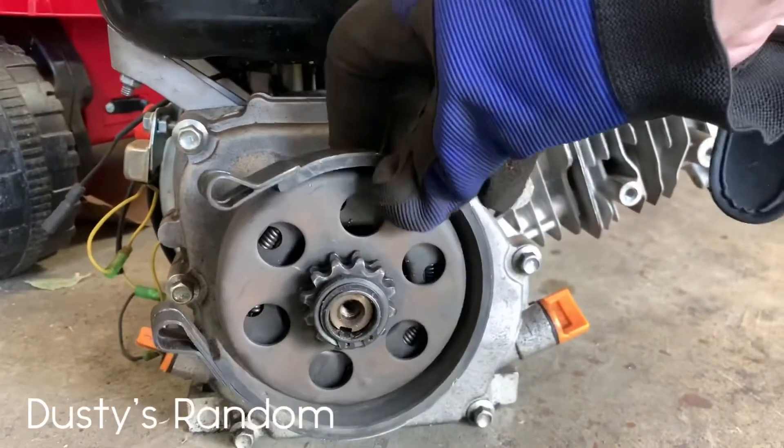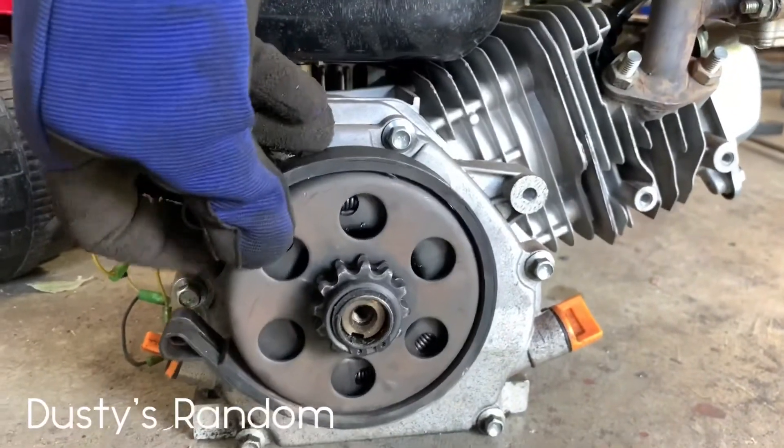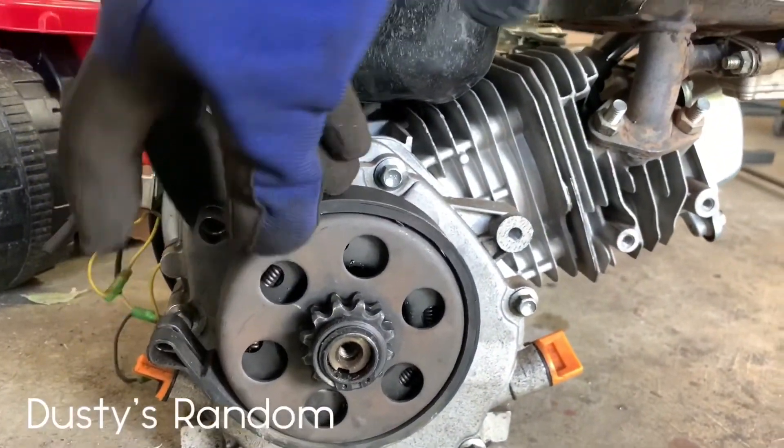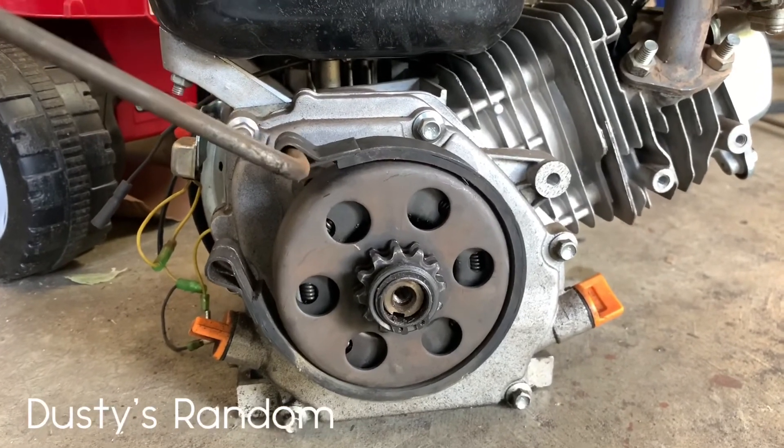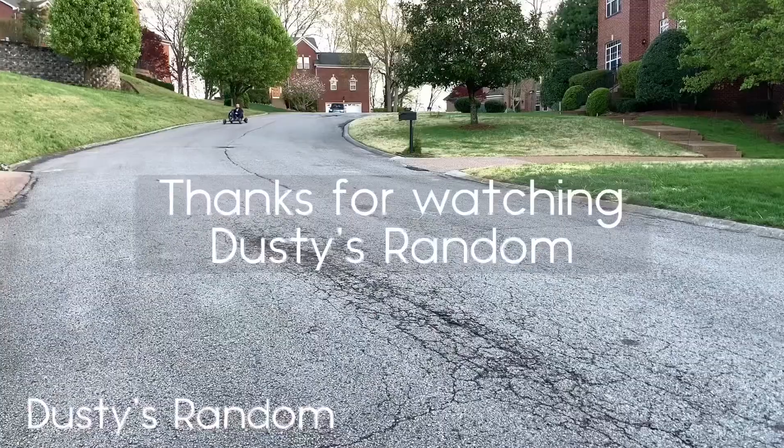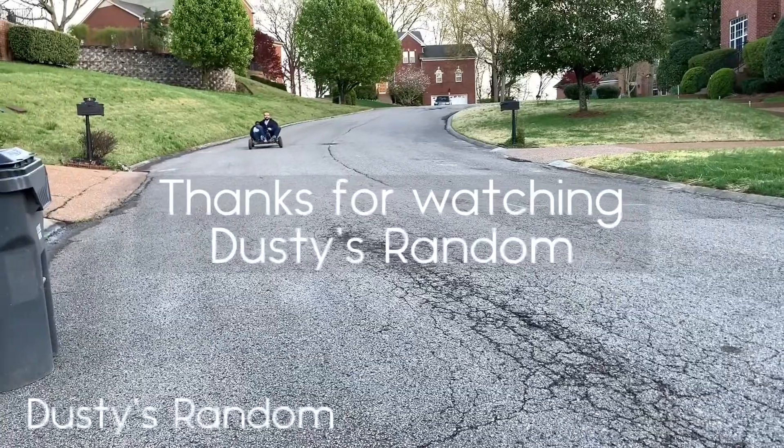I don't prefer this method as if the chain breaks, you will have no stopping power. But some people have a lot of success with it. You put the band around the clutch. Here's an example of good band brakes.